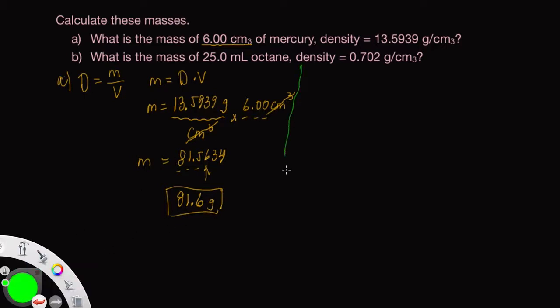Let's look at problem B now. Here we've got a liquid, octane, and it has a density of 0.702 grams per cubic centimeter. We do the same thing. Mass is equal to density times volume.